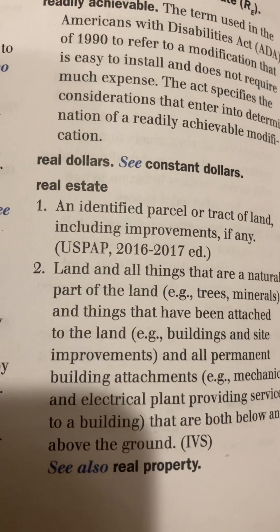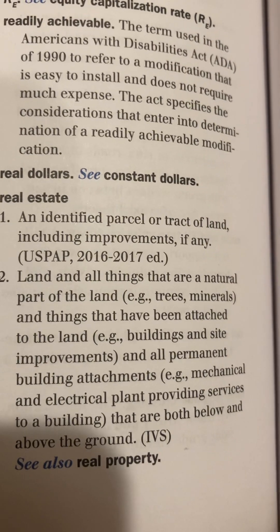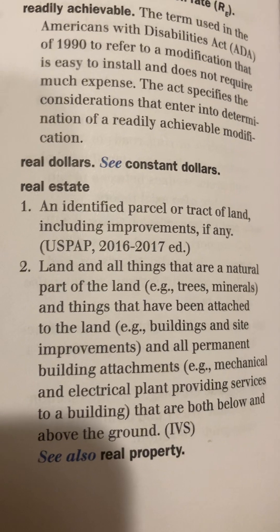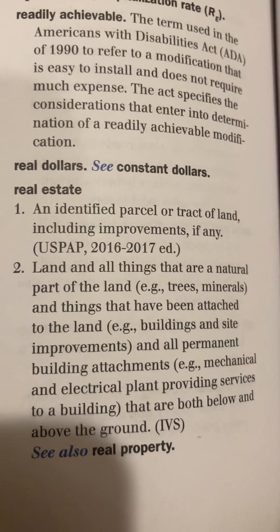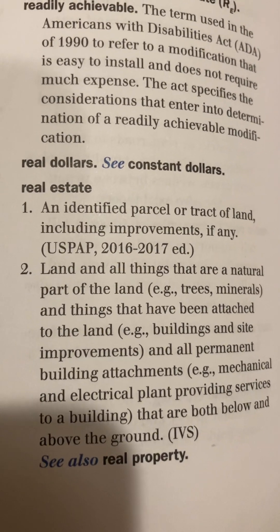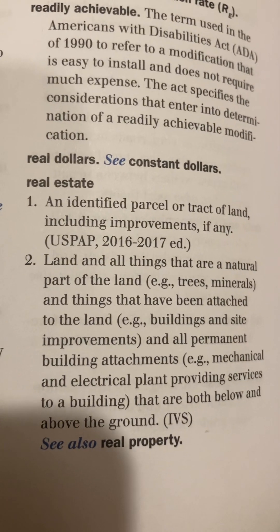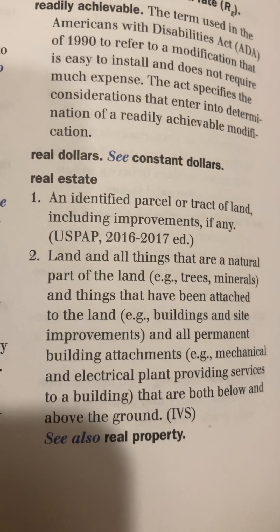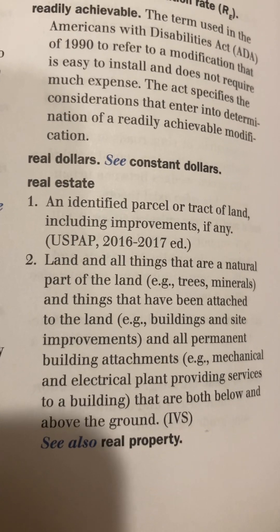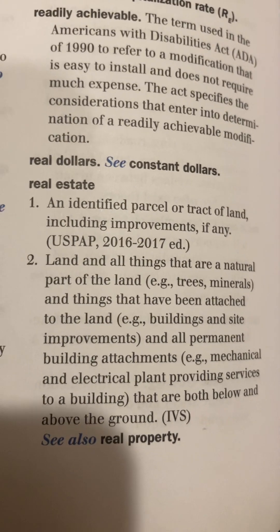Real Estate (definition 2): Land and all things that are a natural part of the land — for instance, trees and minerals — and things that have been attached to the land, for instance buildings and site improvements, including mechanical and electrical plant providing services to a building, both below and above the ground.